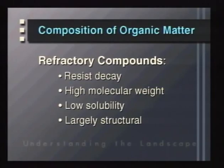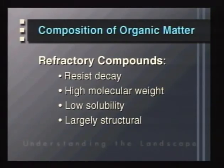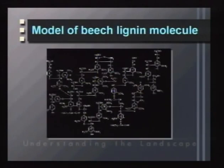In terms of the breakdown or utilization of organic material, we use two major terms. One term is refractory. Refractory compounds are those that resist decay. They tend to be very large molecules with very high molecular weights, low solubility, and very strong structural components. These refractory materials are very difficult for organisms to assimilate or consume. An example would be the molecule lignin from beech leaves — a very complex molecular structure that is very difficult for microbes or animals to break down and use for energy.